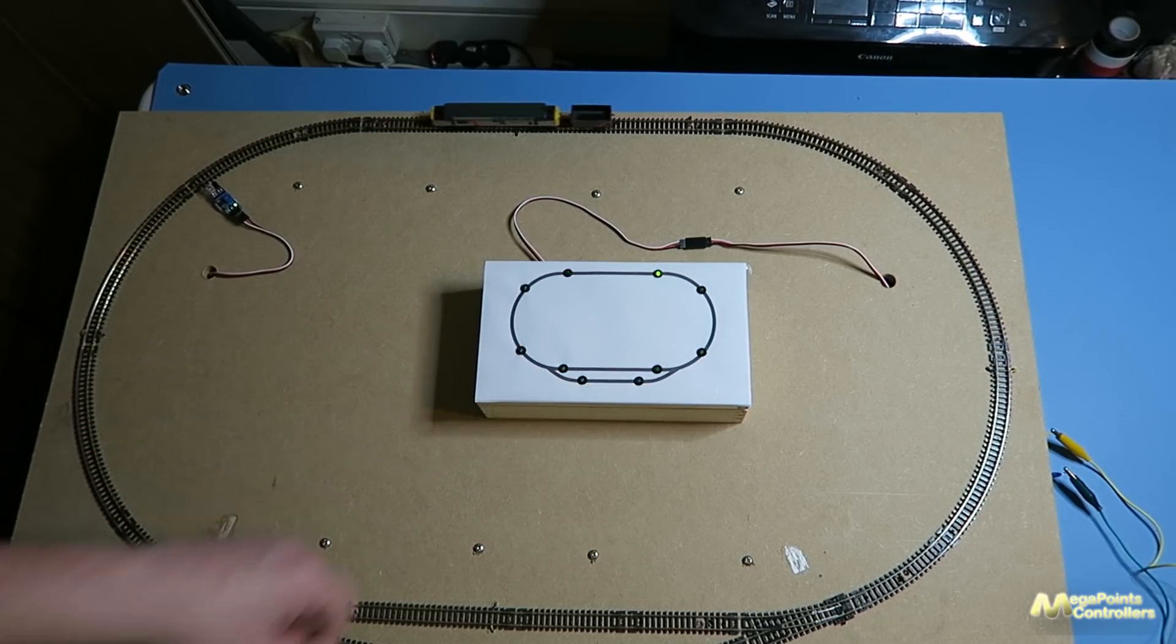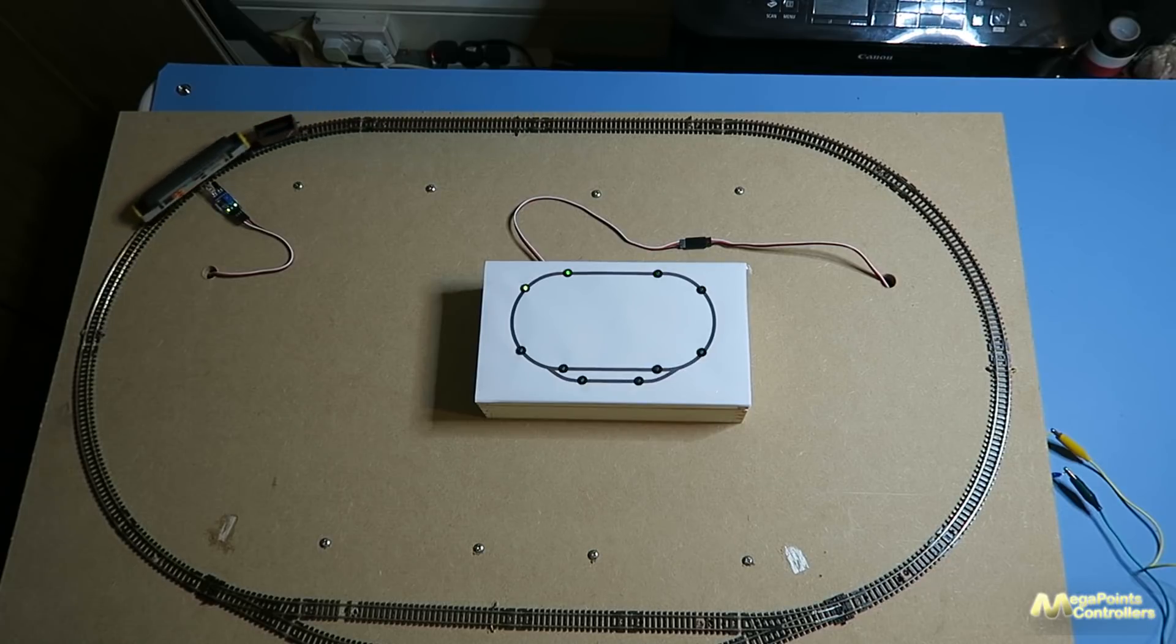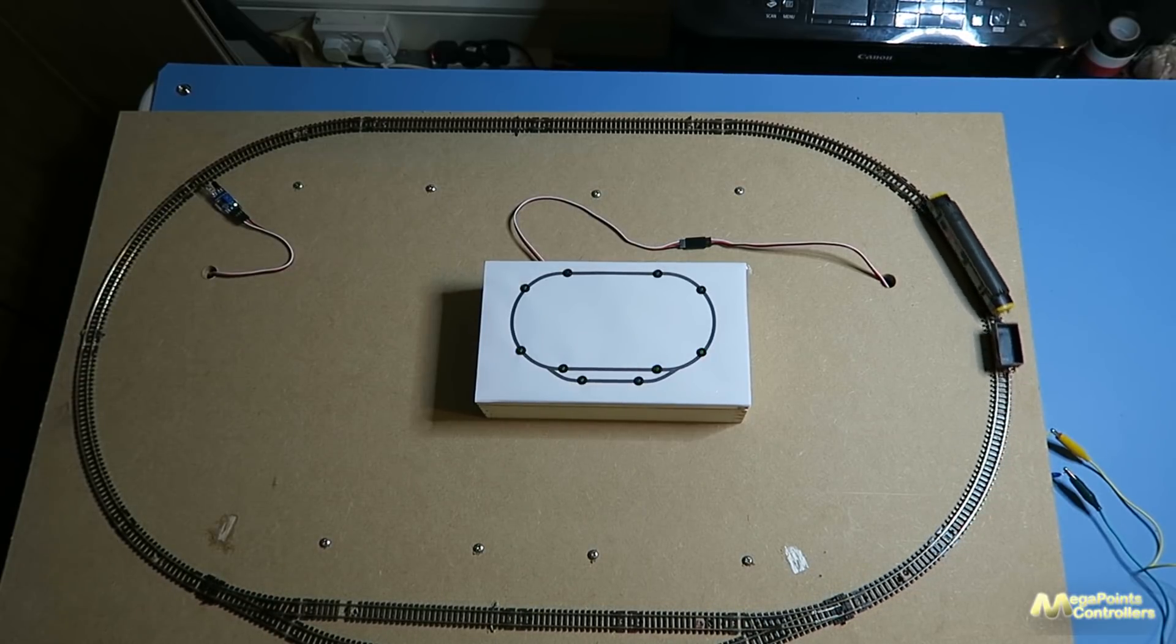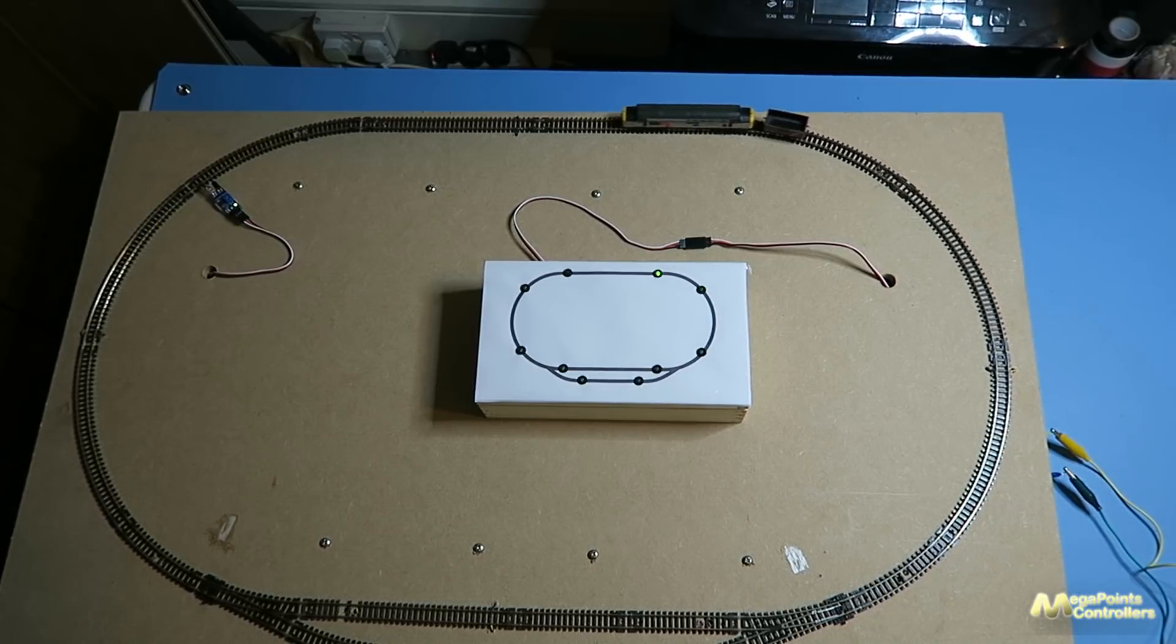Oh I can see I've got these two wired the wrong way around. Great. But hopefully that gives you a flavour for how the infrared analogue detectors work.